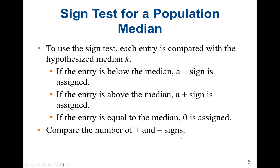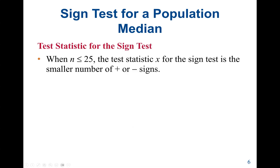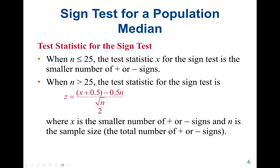We compare the number of positive and negative signs. If the sample size is less than or equal to 25, the test statistic X is the smaller number of positive or negative signs. If the sample size is greater than 25, we use the Z formula: Z = (S + 0.5 − 0.5·N) / √(N/2), where S is the smaller number of positive or negative signs and N is the sample size.